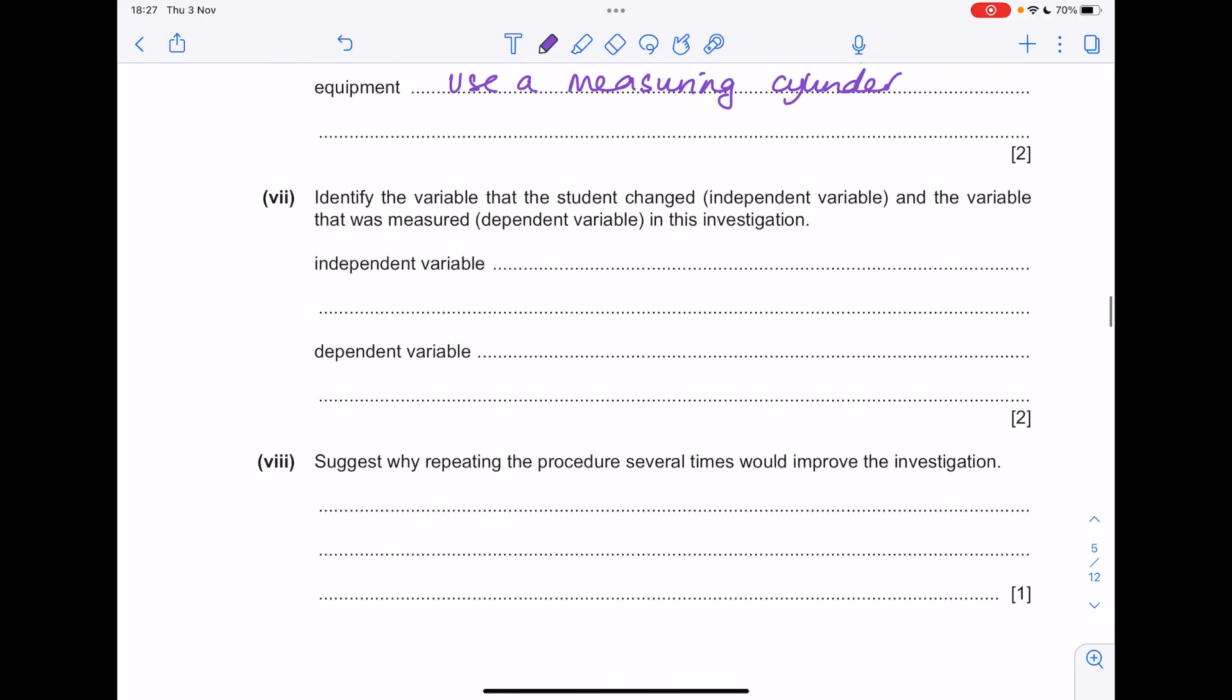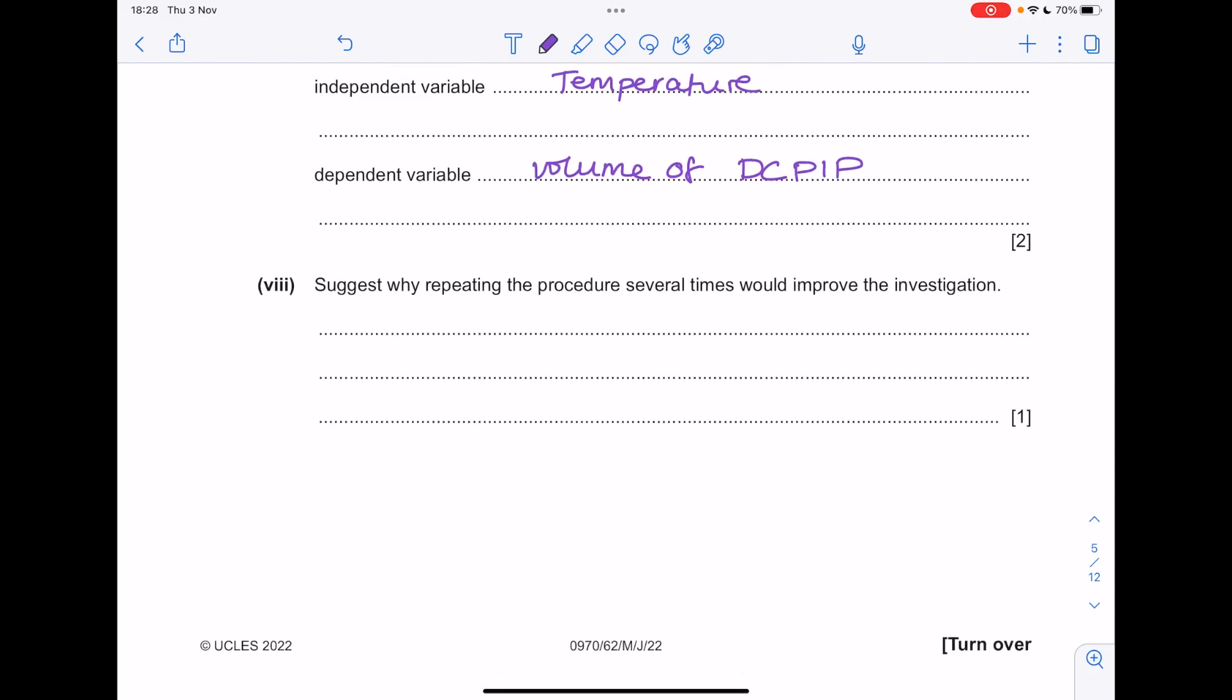Identify the variable that the student changed and the variable that was measured. What they changed was the temperature, and what they measured was the volume of DCPIP. Just by repeating the procedure several times, it would improve the investigation as it would improve the reliability and help you identify anomalous results.